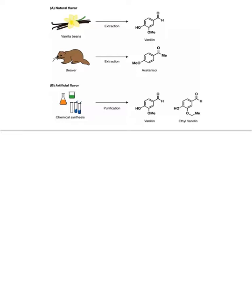Flavor is defined by how we perceive food and other substances based on a combination of our senses. Since all foods are made up of chemicals, everything we taste is a response to chemicals. The distinction between natural and artificial flavor is the source of those chemicals. Natural flavors are created from anything that can be eaten, such as plants and animals. Artificial flavors come from anything that is inedible, processed to create flavoring chemicals through methods such as chemical synthesis.